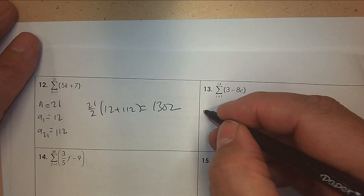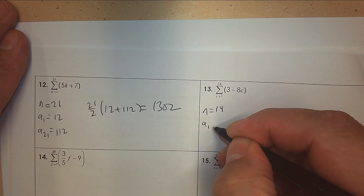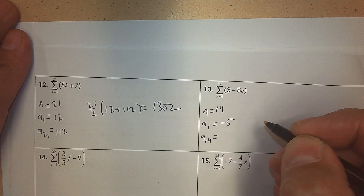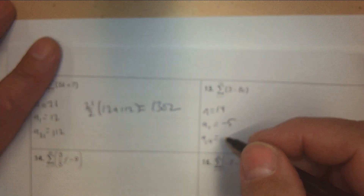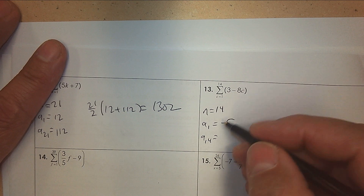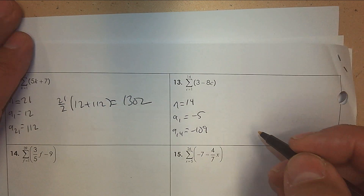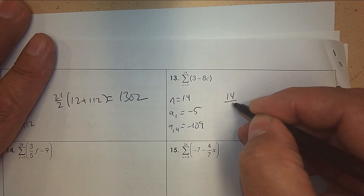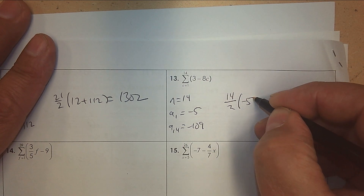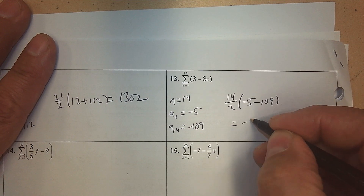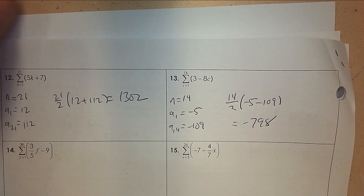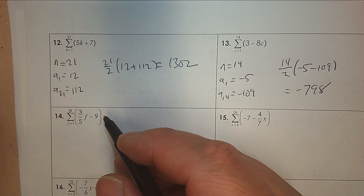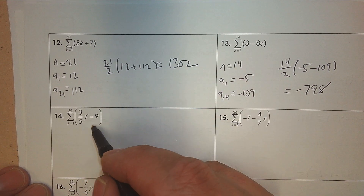Next one — how many do I have? 14 terms. Plug in 1 and you get negative 5. Plug in 14: 8 times 14, then negative plus 3 — so it's negative 109. Use your calculator. The formula is the number of terms divided by 2, times (first term plus last one). How I know this is arithmetic — these are all linear expressions; the degree is 1.